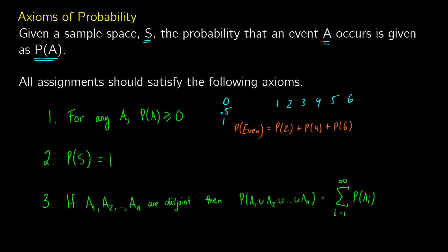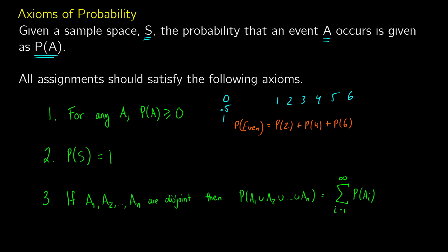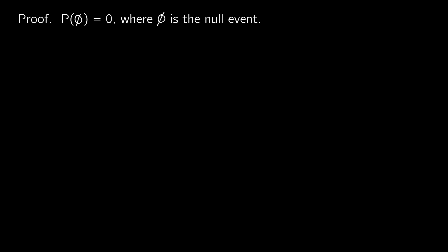From these three axioms we can derive some interesting results. The first thing we can derive is that the probability of the empty set is equal to zero. The empty set is just a null event — an event where nothing happens — so that probability should be zero.